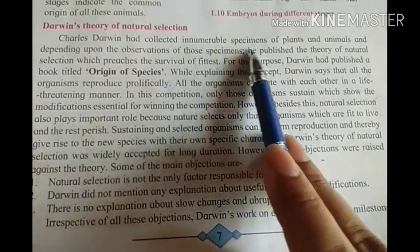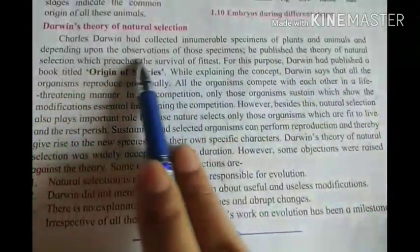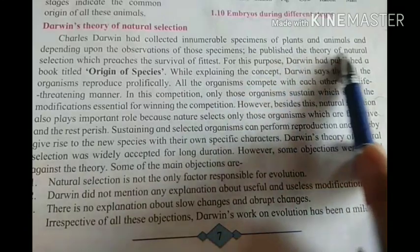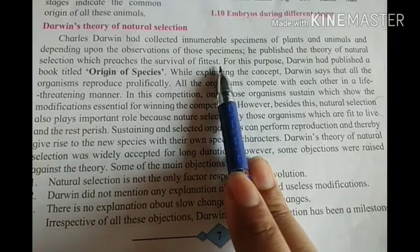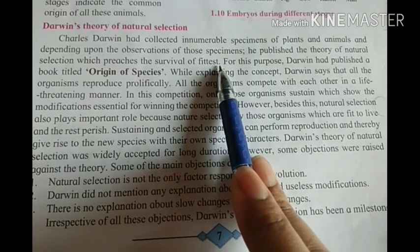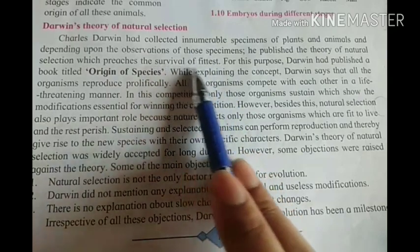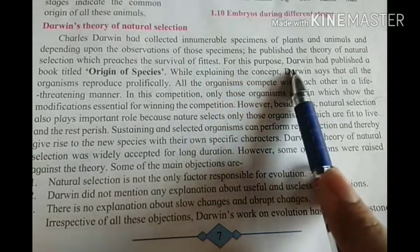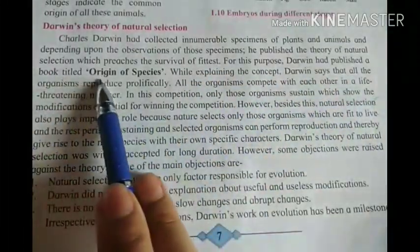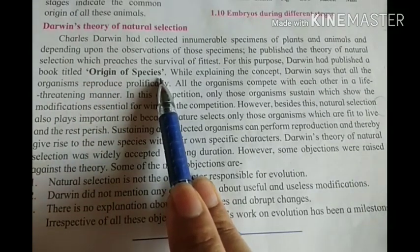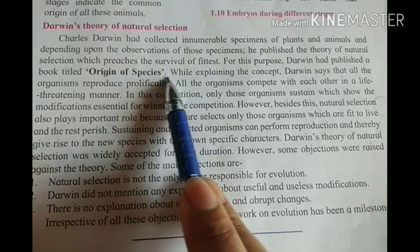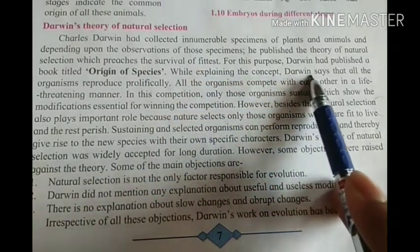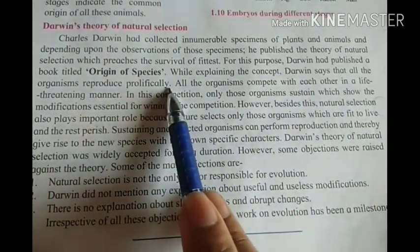Charles Darwin had collected an innumerable specimen of plants and animals, and depending upon the observation of those specimens, he published a theory of natural selection which preaches the survival of the fittest. Darwin had published a book titled Origin of Species, which explains the concept. Darwin says that all the organisms reproduce prolifically.